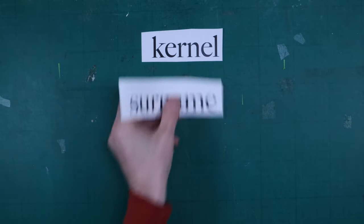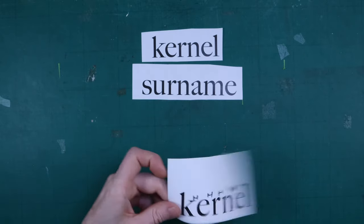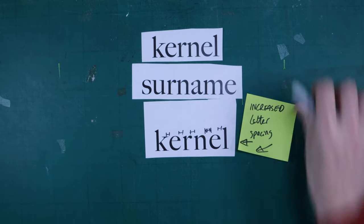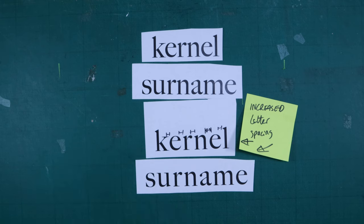If anyone knows of research being done in this area, do drop us a comment below. As well as sans serif scoring higher than serifs, there are a few other elements that seem to contribute positively to legibility. Fonts with above-average letter spacing helped reduce letters blending into each other and forming other letters. This seemed to make a big difference on words such as 'kernel' and 'surname', where the R and the N start merging and become an M.